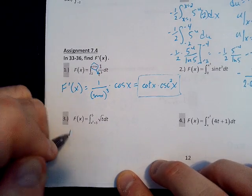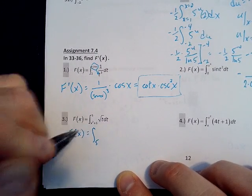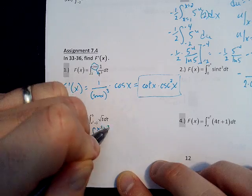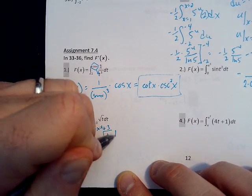First of all, we need to flip these. So I'm going to rewrite F as the integral from 5 to X squared plus 3. When I flip those, that means I put a negative sign out front, and then I still have the square root of T dt.